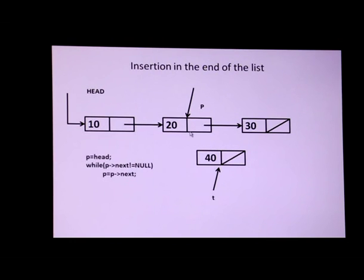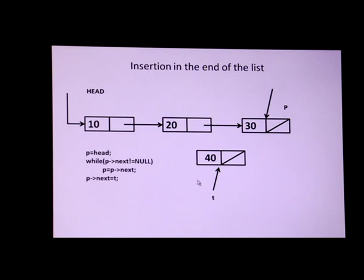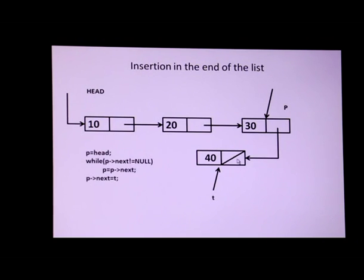Once P has moved to the last node, the condition P.next != null becomes false, and control moves to the next statement. T's next part should be null, and P's next should contain the address of T — written as P.next = T. Once this line is executed, the pointer rearrangement is complete.